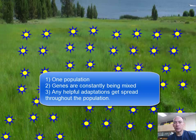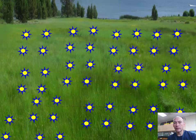Any advantageous trait that happens in one flower will eventually spread to the whole population by natural selection, so they all gradually change together. We are not going to get two radically different types of flowers as long as they are continuously exchanging their genes.